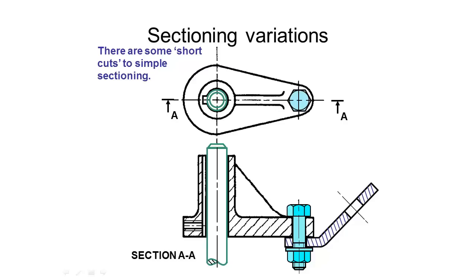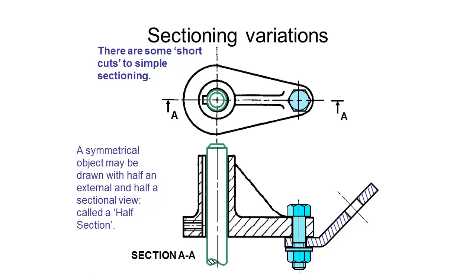When we're sectioning there are some shortcuts which we can take. Firstly, if an object is symmetrical we can draw half of a view with it sectioned and half of it with the external view. If we take this axis along here where we've taken section AA, we can see that it's symmetrical around that point.